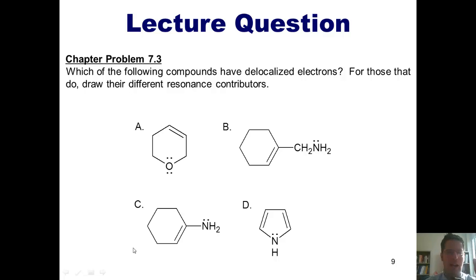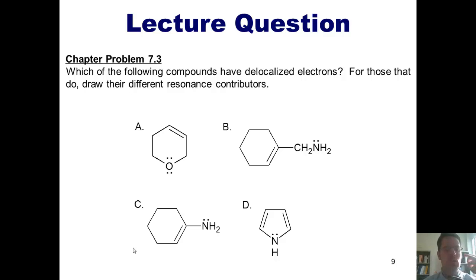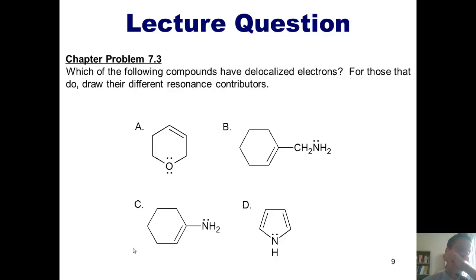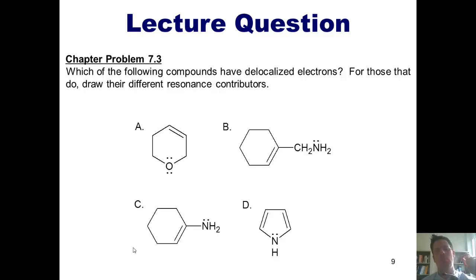Let's take a look at a chapter problem. Which of the following compounds have delocalized electrons? For those that do, draw their different resonance contributors. I'm going to show you the answers, but I'd like you to pause if you wish and take time to see if you can figure out the answer on your own before moving on.